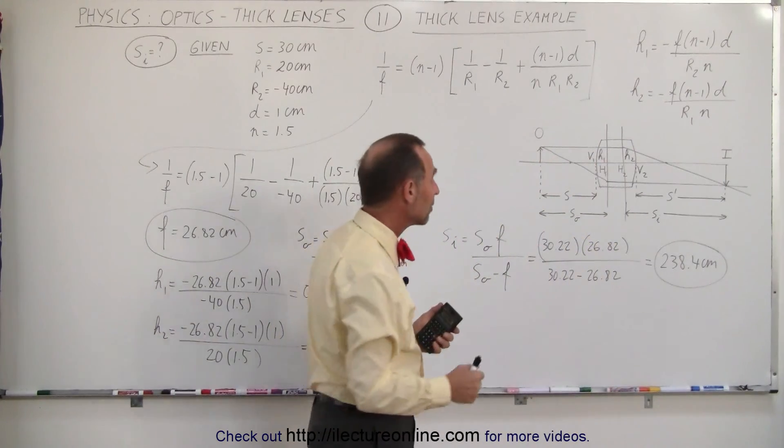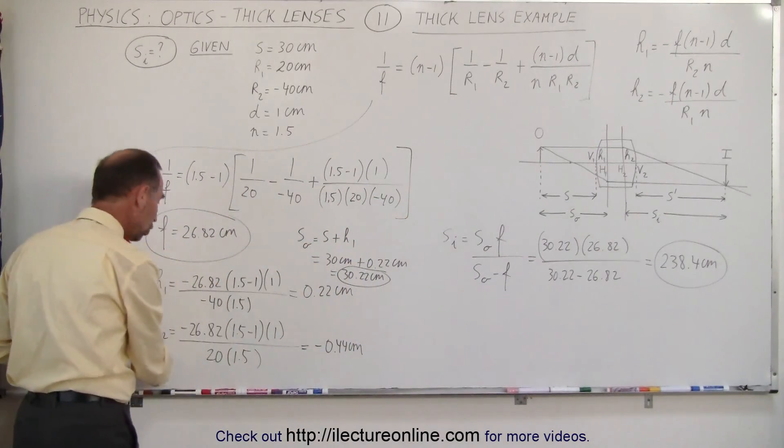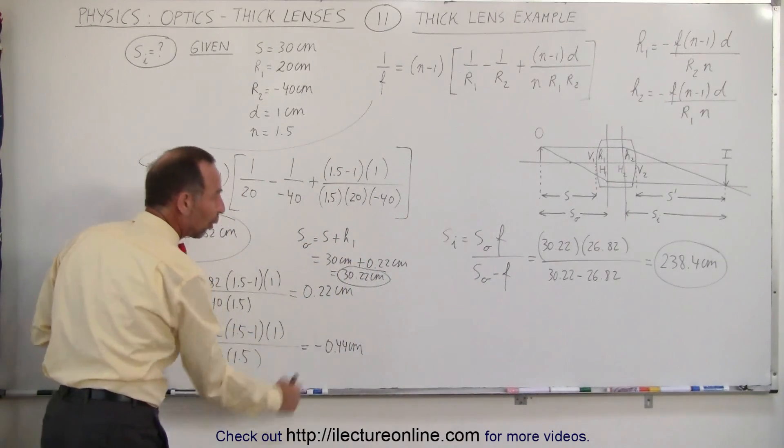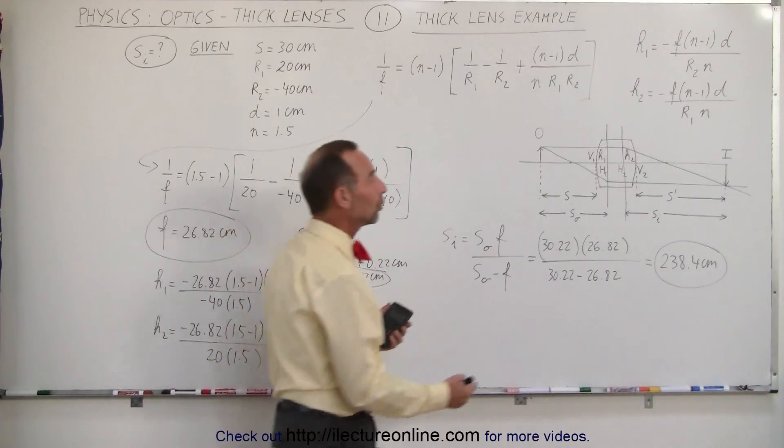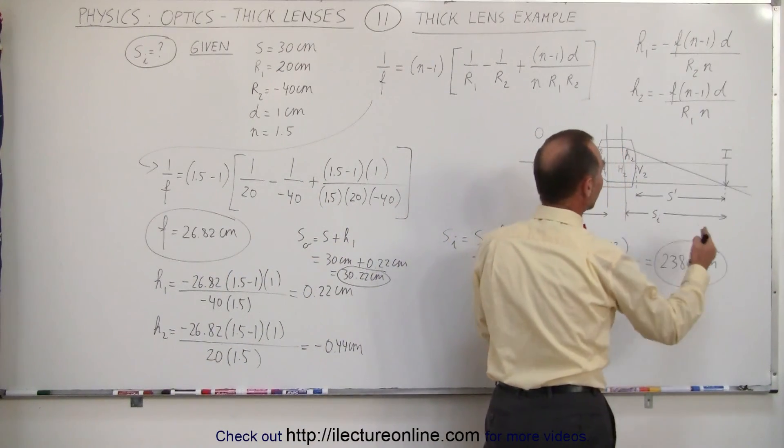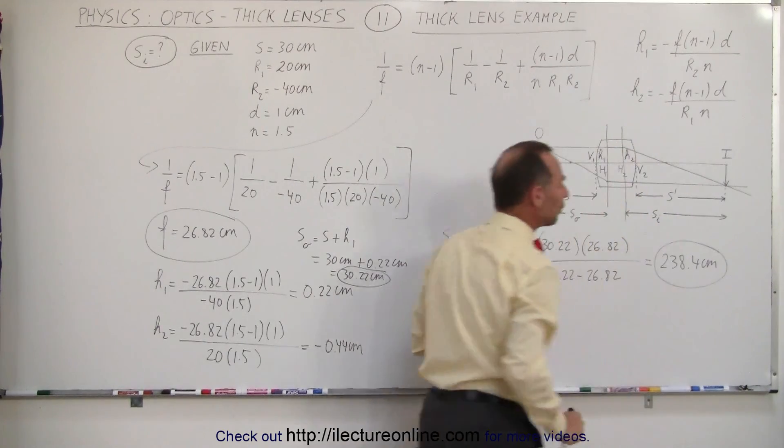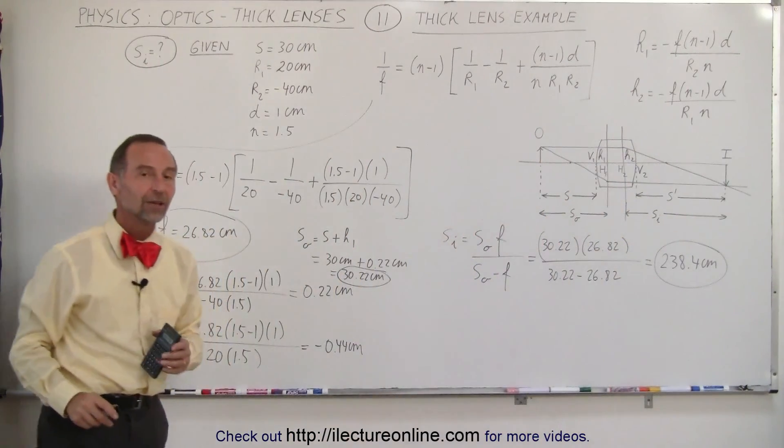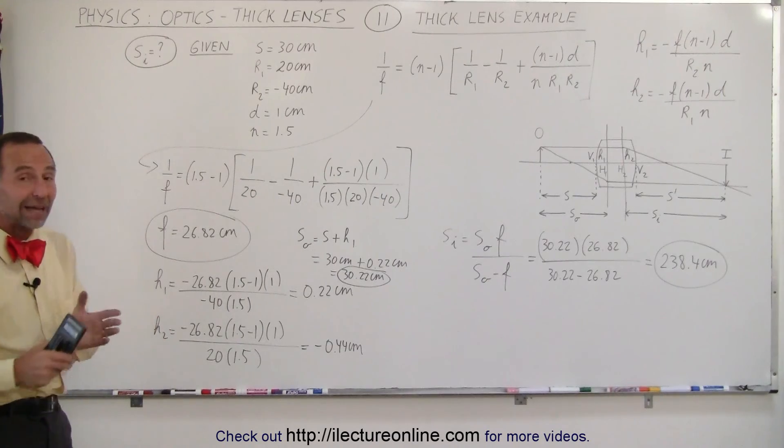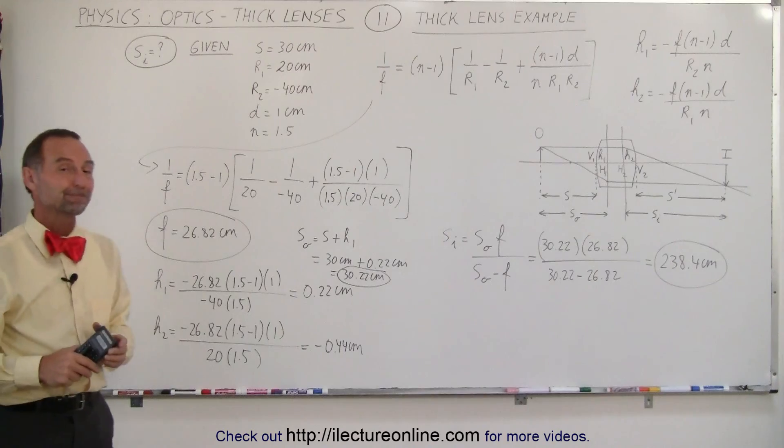To find the distance from the lens to the image, we would have to take this distance and subtract from that h2, so subtract another 0.4, so the distance between the image and the lens is actually 238 centimeters, but the distance from the image to the principal point, the back principal point, is 238.4 centimeters. So that's how we have to deal with finding objects and images using thick lenses. That's how it's done.